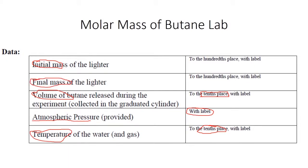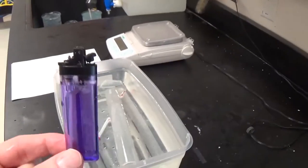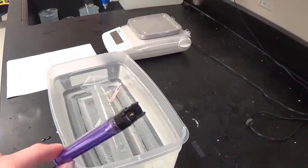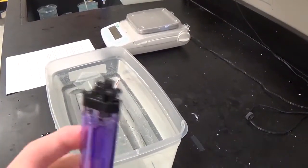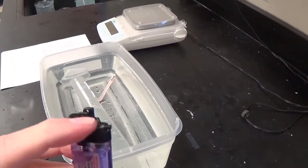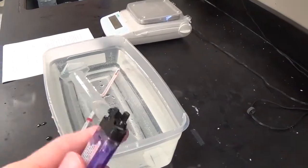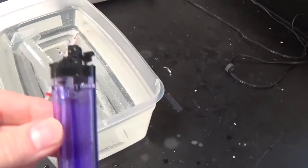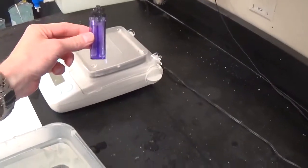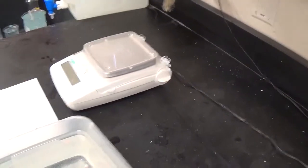Now you need to get the final mass of the lighter. In order to do that, you need to make sure that the lighter is dry. So give it a little shake to get the water drops off. Dry it with a paper towel. Blow on it. Check all the little cracks. Blow in there to make sure that there are no drops hiding. Because we don't want any mass of water. We want the mass of just the lighter. So that we can subtract and get the amount of butane that came out of it.